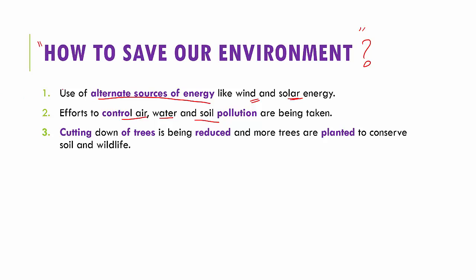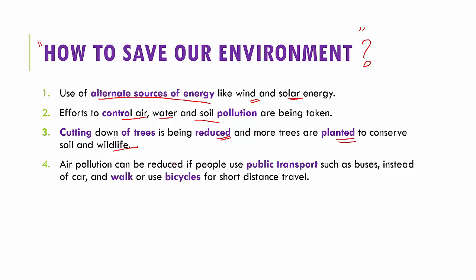Third, cutting down of trees is being reduced and more trees are being planted to conserve soil as well as wildlife. Air pollution can also be reduced if people use more public transport like buses and autos instead of using our own private car or two-wheeler. And to travel short distances, we should prefer going by walk or, if it's a little further away, we could use our bicycles.